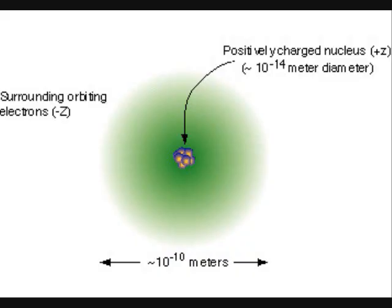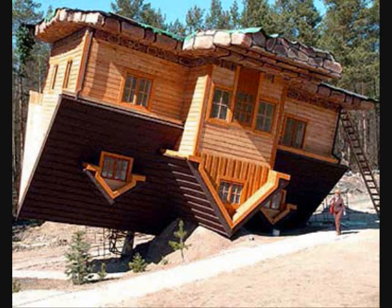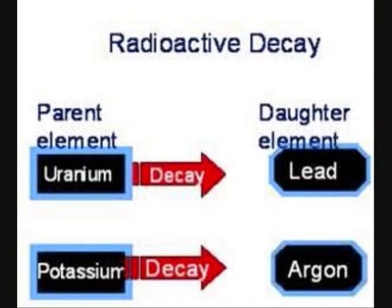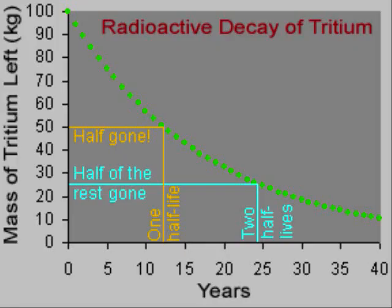When the nucleus of an element is unstable, it transforms into another element by emitting particles and/or energy to become more stable. While it is impossible to predict exactly when any atom will decay, we can model a probability function of decay, which with a large enough sample shows when half of the sample will decay.